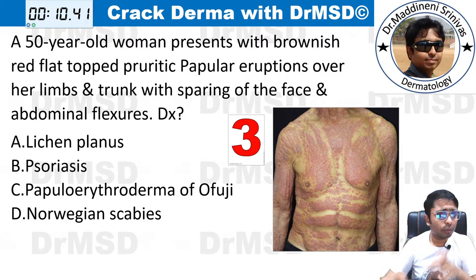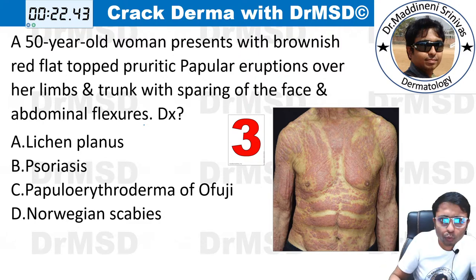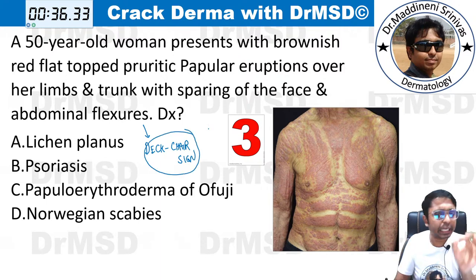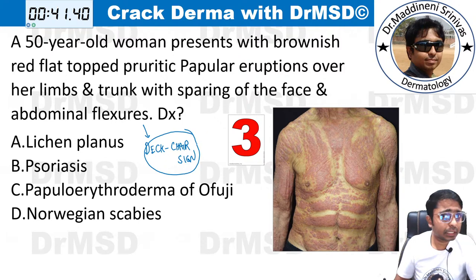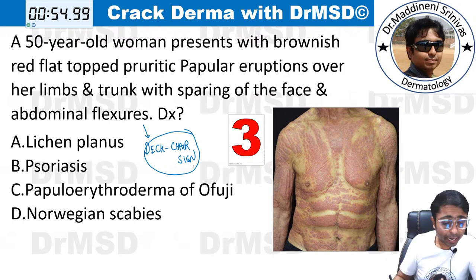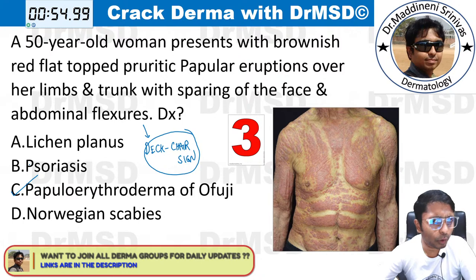A 50-year-old woman presents with brownish-red, flat-topped pruritic papular eruptions over her limbs and trunk with sparing of the face and abdominal flexures. One clue: sparing of the face and flexures is called the deck chair sign. You need to identify the diagnosis. The answer for this question is option C — papillo erythroderma of Ofuji. This is a very important, potentially future MCQ, so make a note of it.